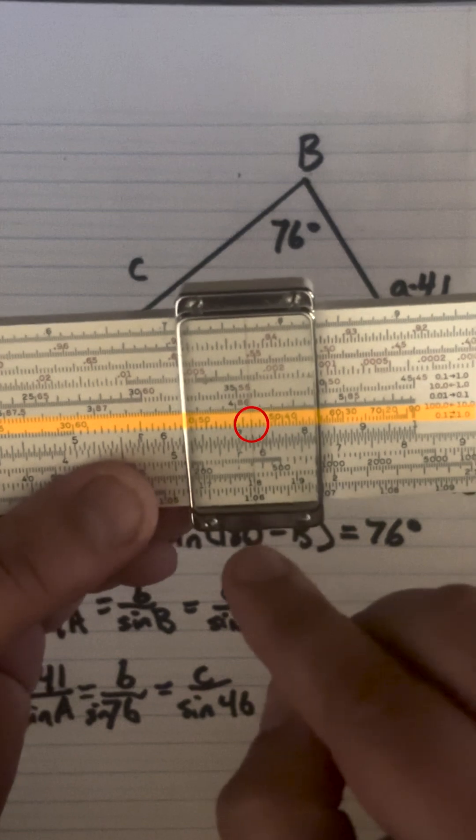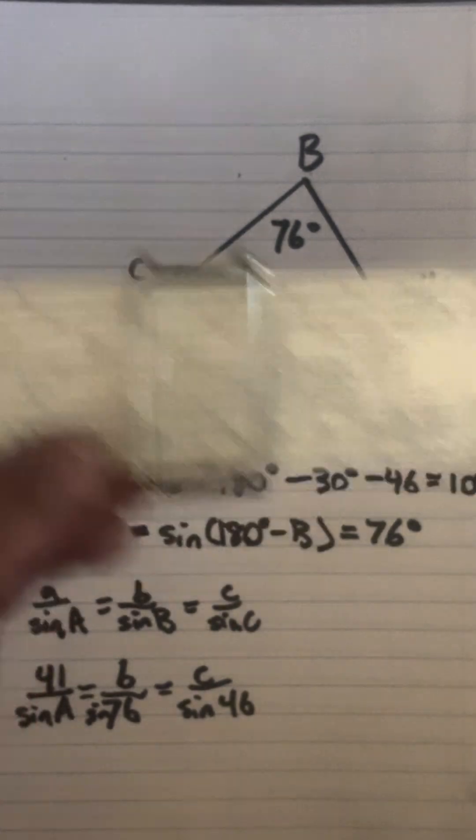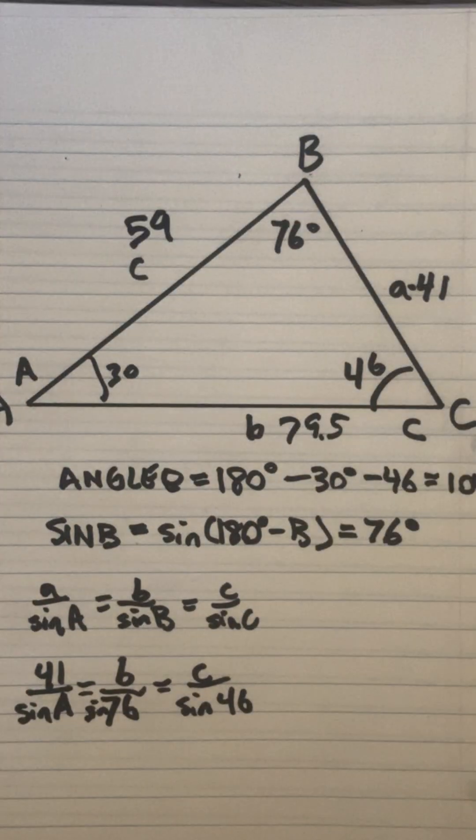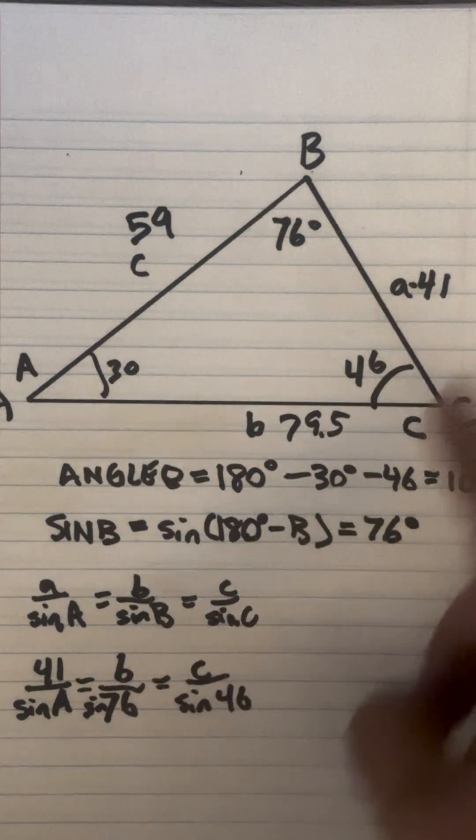If we go to sine 46 we will get 59 on the D scale. That gives us 59 and that gives us all our angles and all our sides.